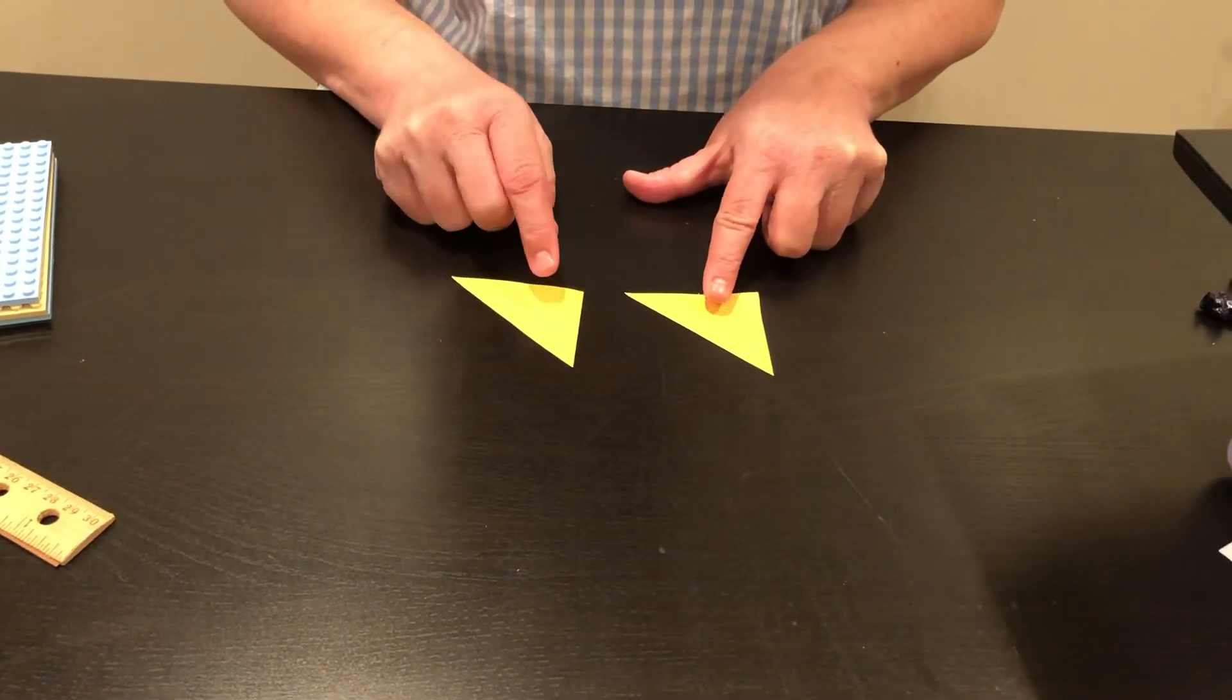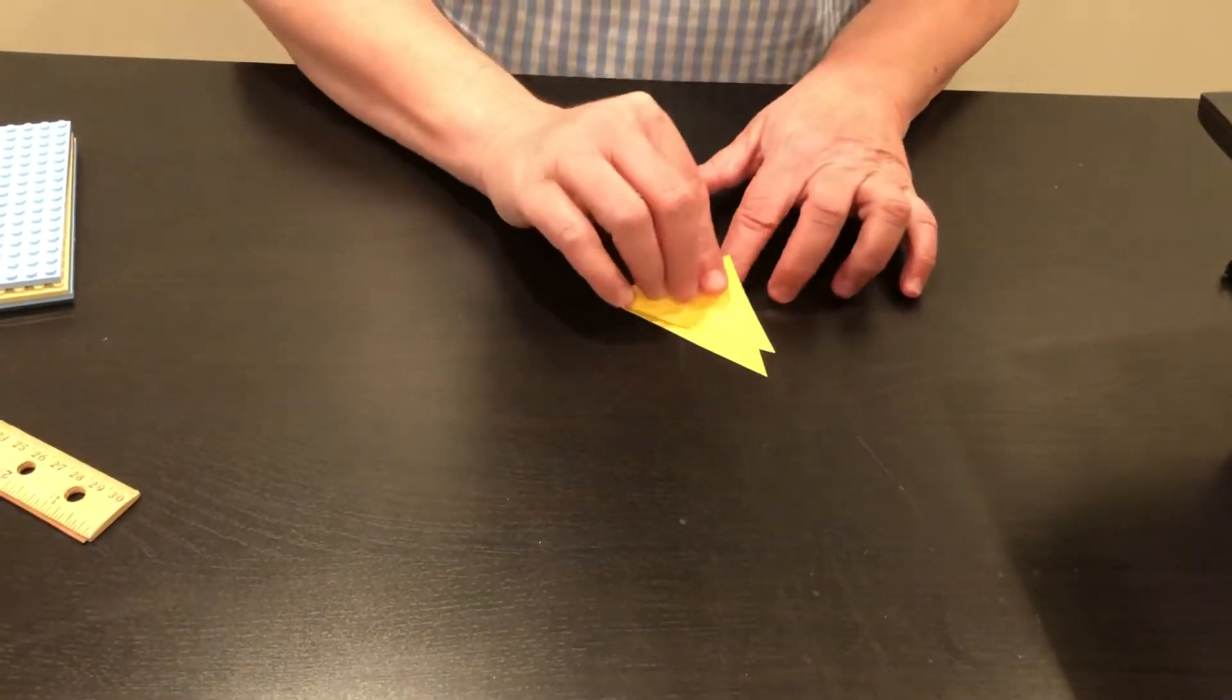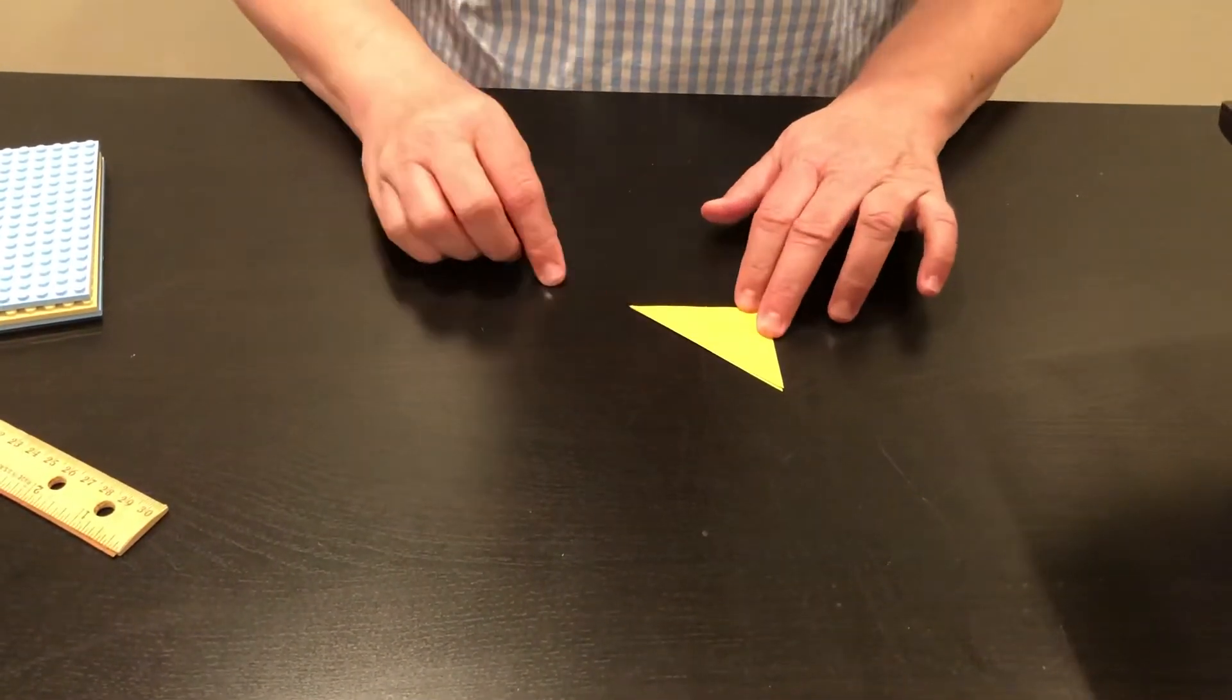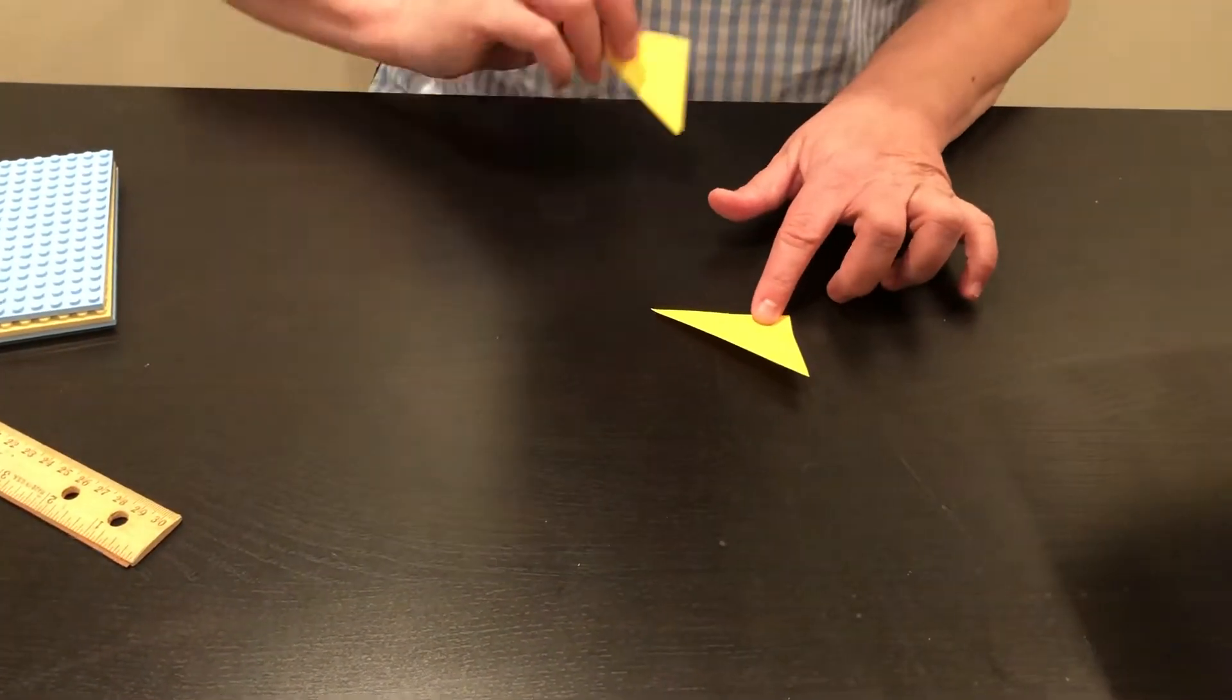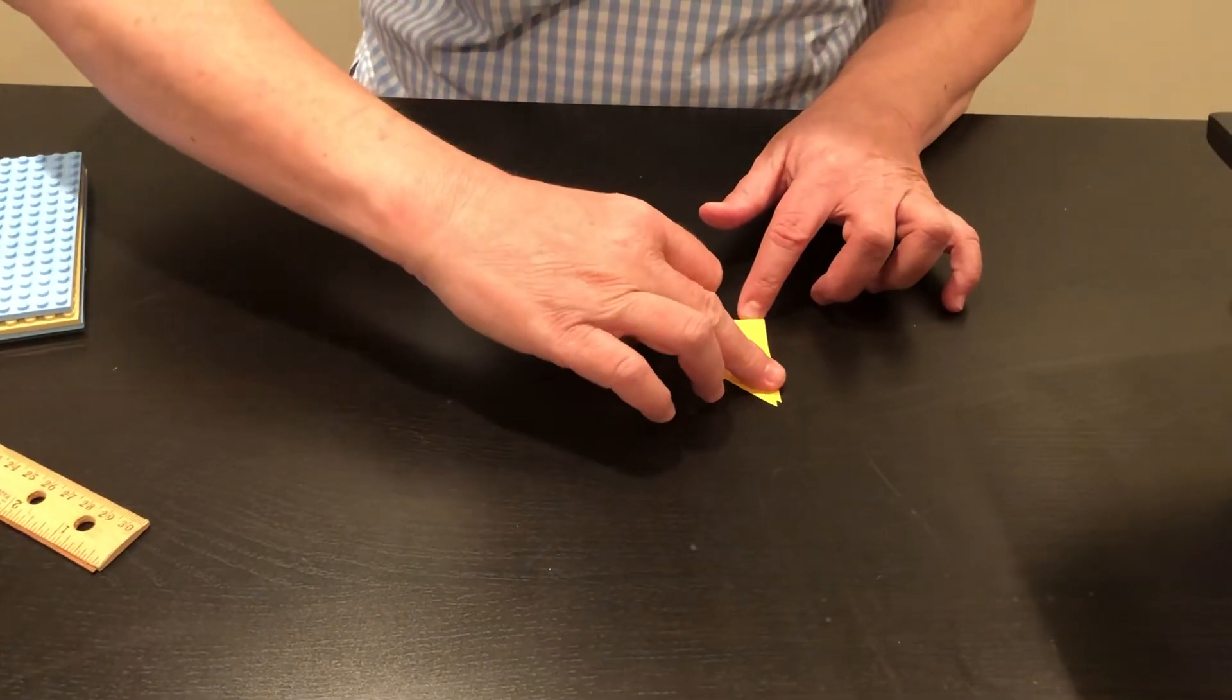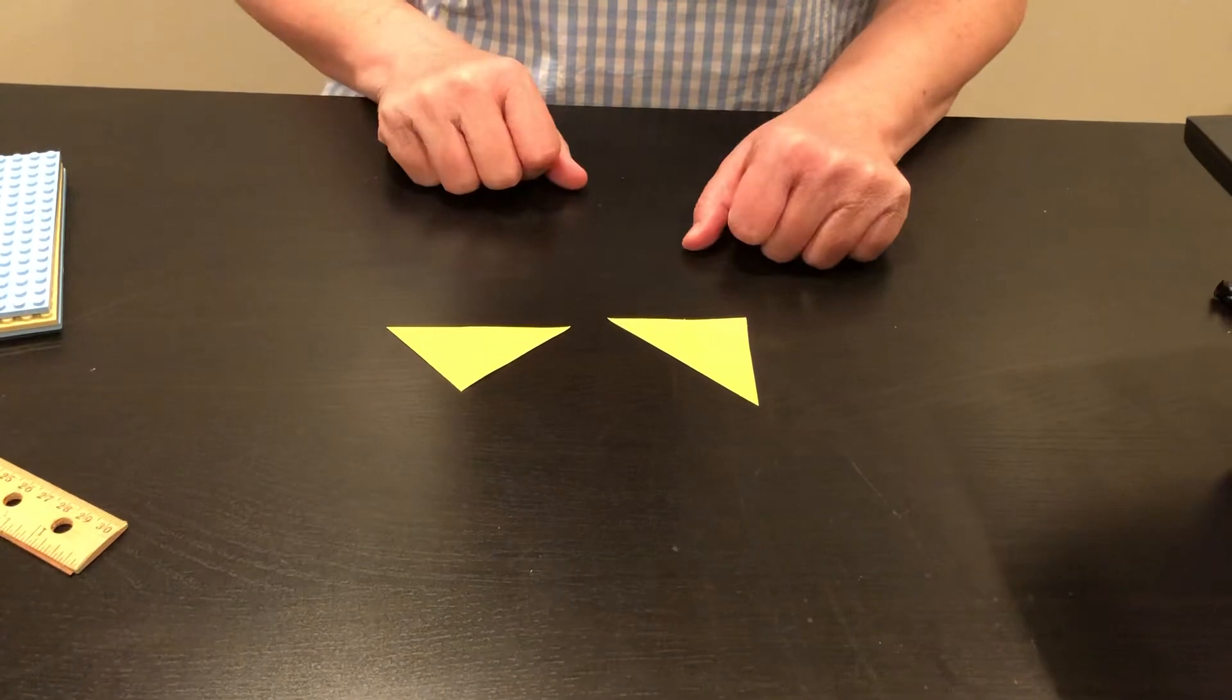Another way that you can move a figure like this is to turn it. So if it started here, a slide again is this, and a turn is something like this. If I wanted to turn it, that's what it would look like.